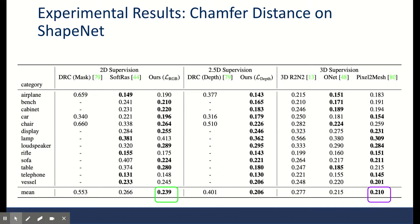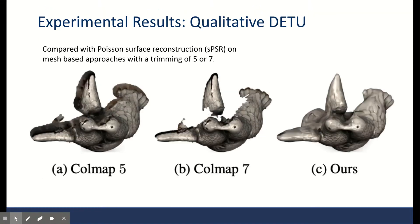In terms of quantitative comparison, they also get best unsupervised chamfer distance on ShapeNet of 0.239, which is very close to supervised results of 0.21. They also test their model on the more complex dataset of DTU and compare their method against previous mesh-based methods. Mesh-based methods require trimming threshold for rendering. As you can see, they get better quality than the two trimmings of both 5 and 7 of the Colmar algorithm, especially 7.